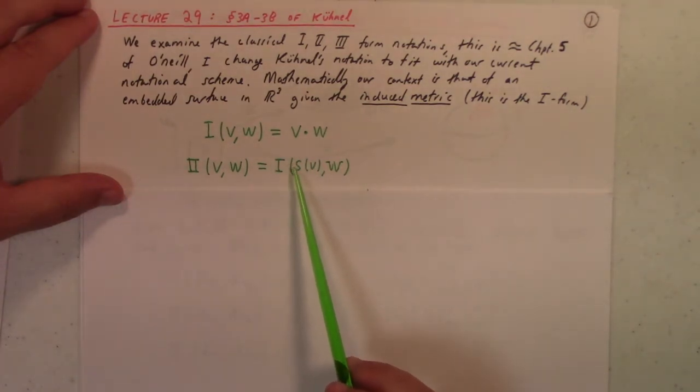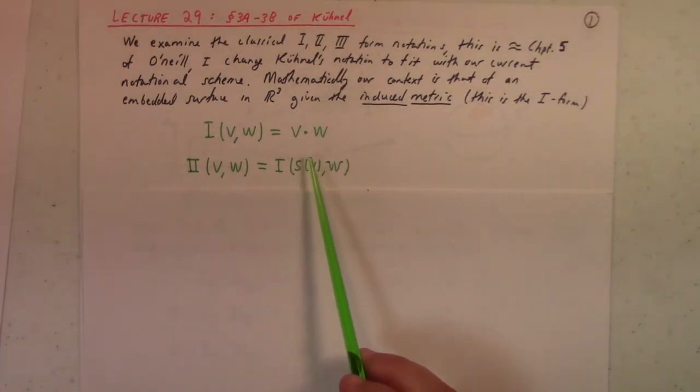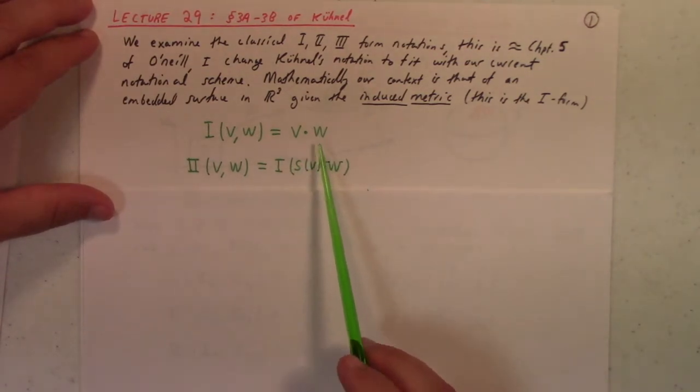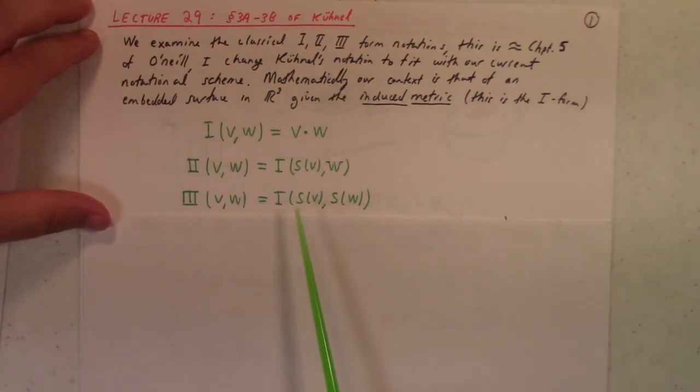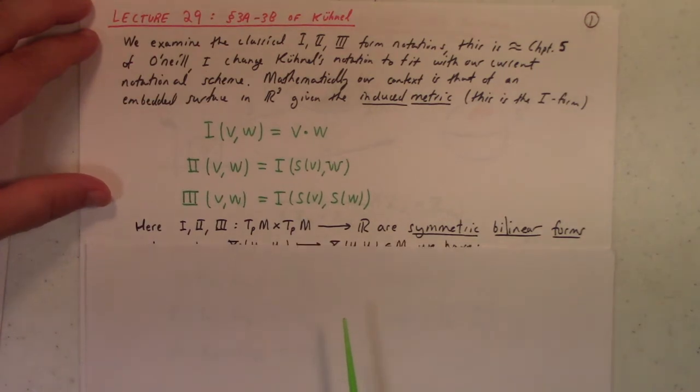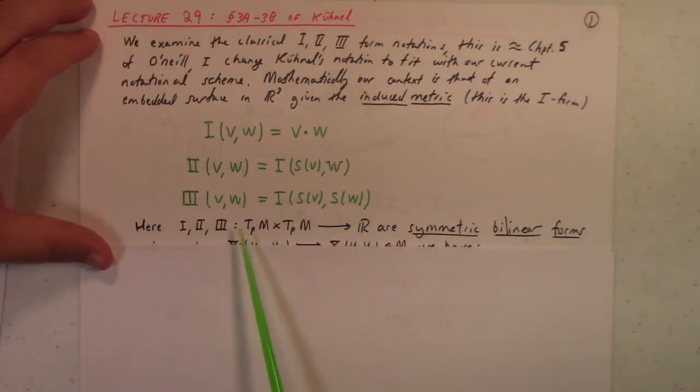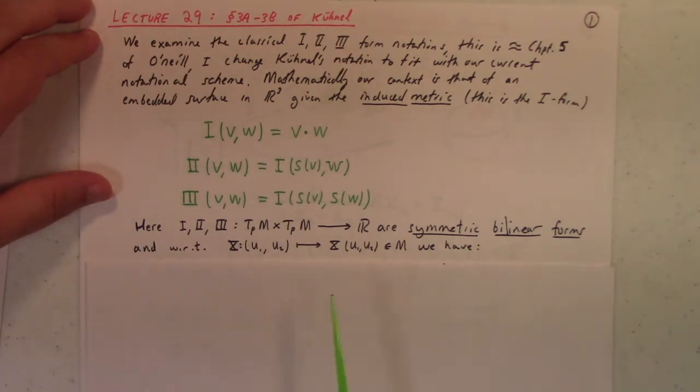The second fundamental form is the induced metric fed the shape operator acting on one vector. The first fundamental form, which is not a differential form by the way, the first, second, and third form, in fact, they're bilinear forms. It's clear enough that this is a bilinear form in V and W, and it's symmetric because the dot product is symmetric. Symmetry of the second fundamental form is also true, but for that you need the symmetry of the shape operator, or as Kühnel talks about it, the fact that it's self-adjoint with respect to the first fundamental form. And then the third fundamental form, which you see less of, it's the first fundamental form fed the shape operator in both arguments like that.